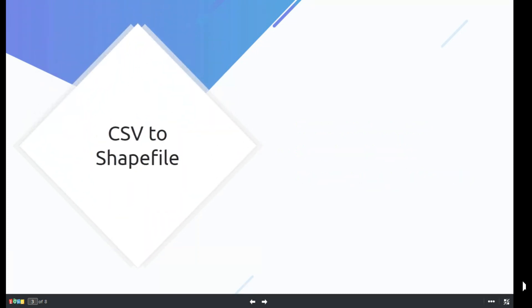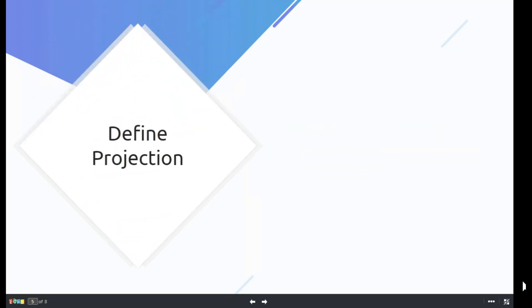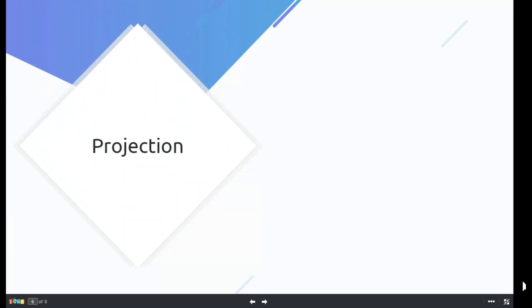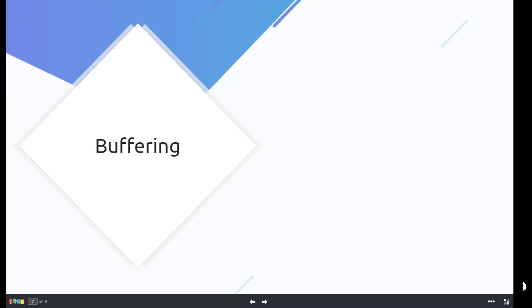The CSV file will be converted into a shapefile — we'll convert the Kajiado schools CSV to a shapefile. Then we'll perform clipping: clipping Kenyan rivers against Kajiado County, as well as Kenyan secondary schools against Kajiado County. Then we'll define the projection of the clipped Kajiado schools, because the CSV file does not yet contain a projection and needs a coordinate system. After defining the projection, we'll project both the Kajiado schools and Kajiado rivers from geographic to Arc 1960 Zone 37 South. Then we'll perform buffering for the rivers — a buffer of 1000 meters, that is 500 meters from the center of the river.